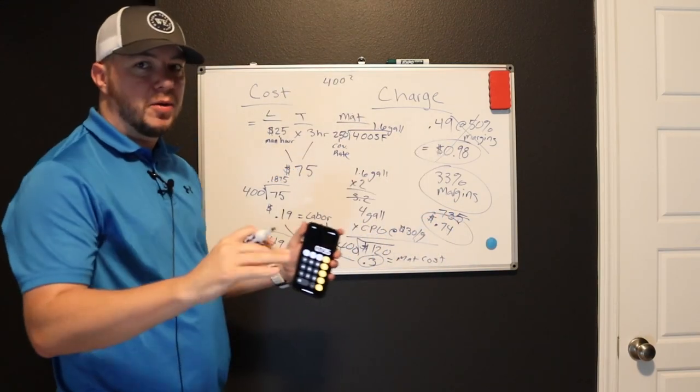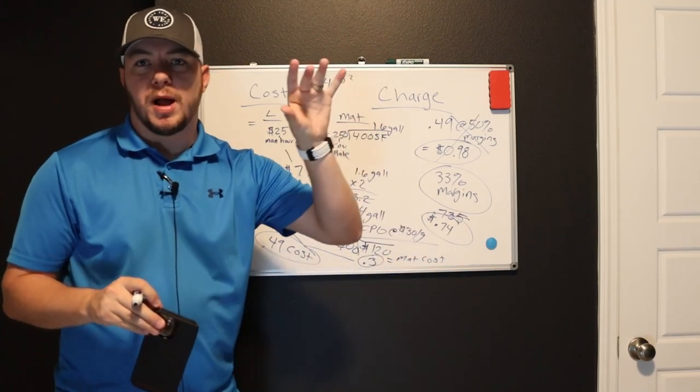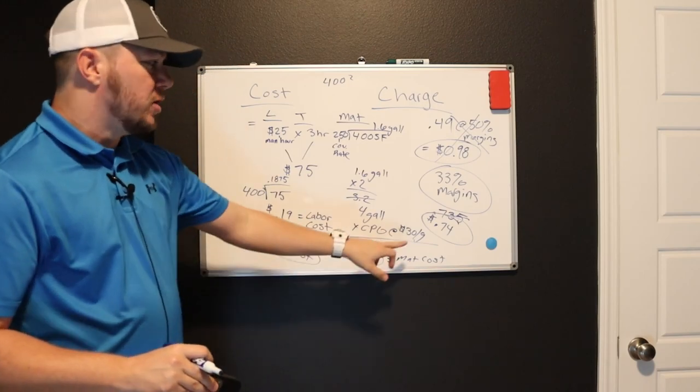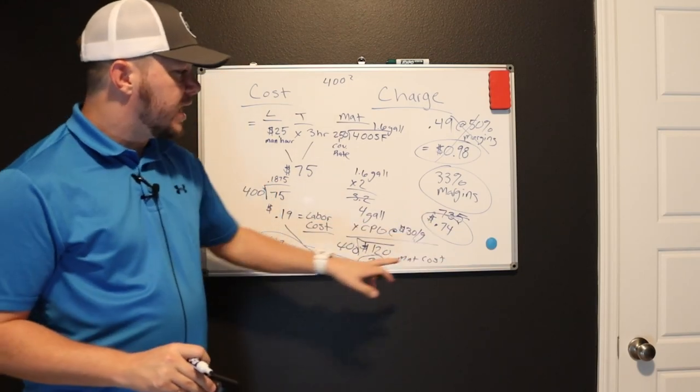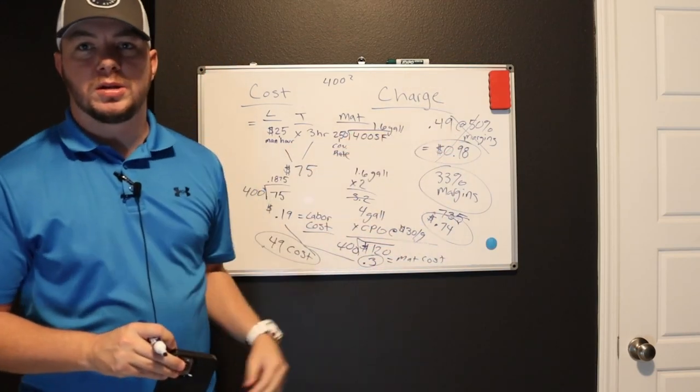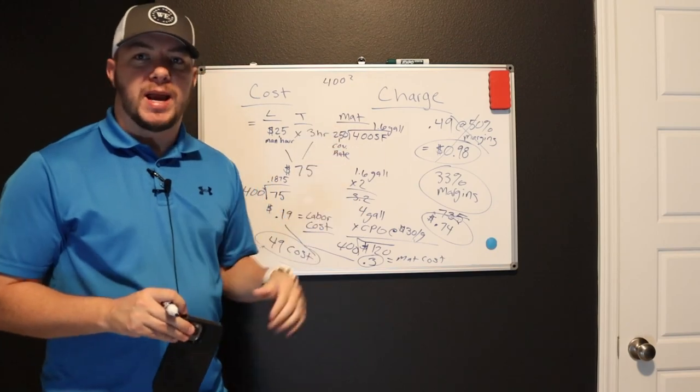Instead of 0.98 cents, I know it's a big difference, but I'm telling you that that's impressive. If you take your costs, multiply it by 1.5, you'll get 33% margins every time. So 0.74 cents per square foot. If these are your costs is what you need to charge on just walls to get a 33% margin and to be competitive in that space.